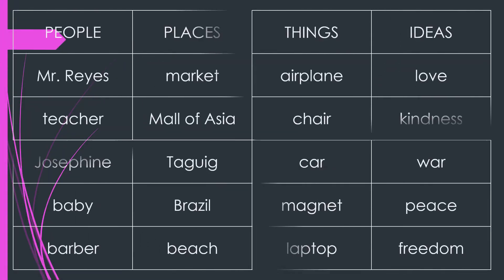Examples of these are, for people, we have Mr. Reyes, teacher, Josephine, baby, and barber.